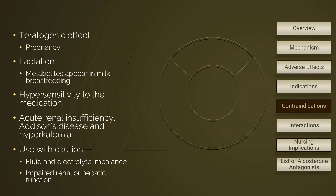Spironolactone can also be used for diuretic-induced hypokalemia. Aldosterone antagonists can cause harm to a developing fetus and are contraindicated during pregnancy. The major metabolites are excreted into breast milk, so it is also contraindicated for breastfeeding. This medication is contraindicated in patients who are allergic to it. Other contraindications include acute renal insufficiency with anuria, Addison disease, and hyperkalemia. Aldosterone antagonists should be used with caution in patients who have fluid and electrolyte imbalance or impaired kidney or liver function.